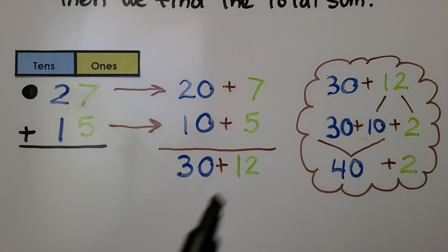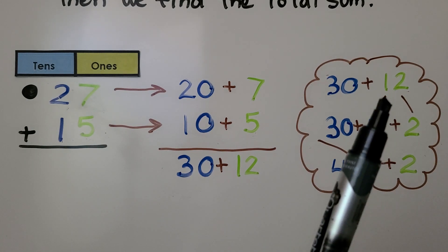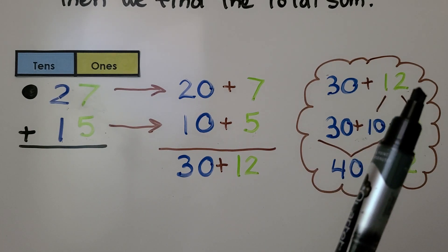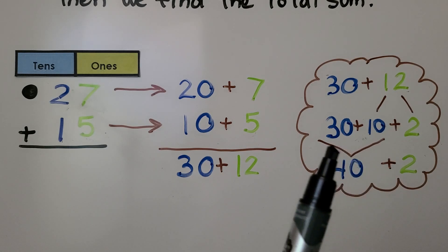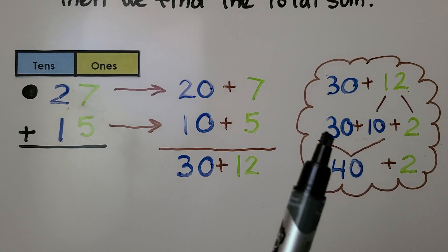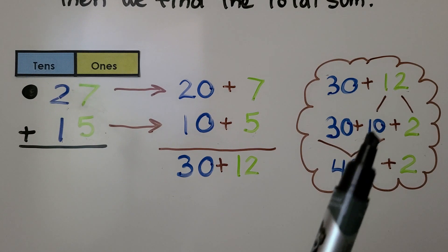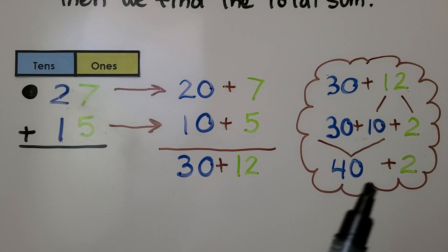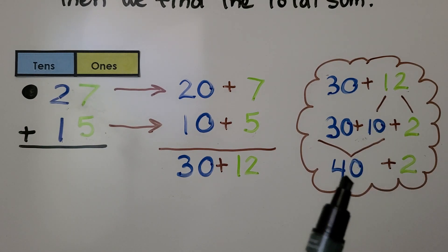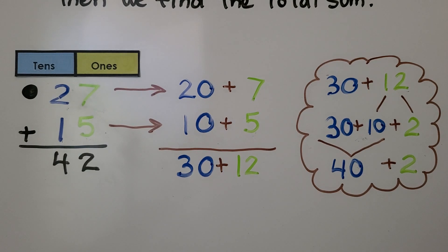We find the sum of the ones: 7 plus 5 is 12. We have a 10 and two ones. We add that 10 to the 30 to get 40, then add the two ones left over. 27 plus 15 is equal to 42.